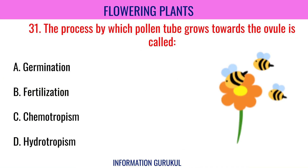The process by which a pollen tube grows towards the ovule is called Chemotropism.